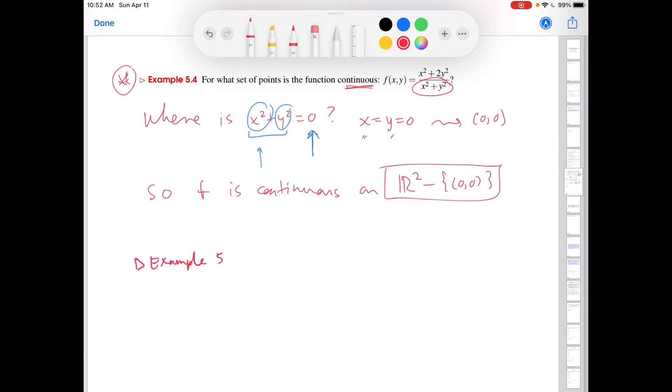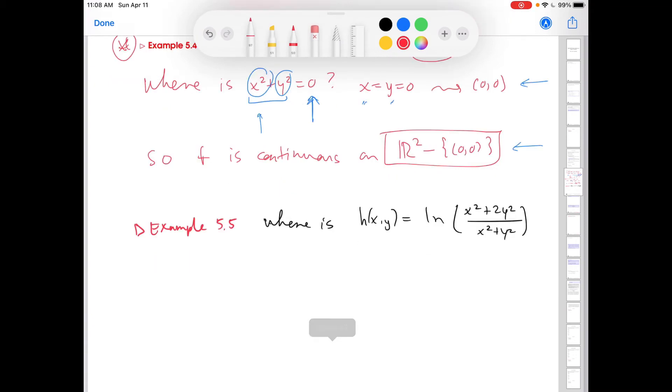So let's talk about a similar result. So how about for what set of points, where is f(x,y) equals ln of this function? And actually, to make things a little easier to talk about, let's call this not f(x,y), let's call this h(x,y). Okay, so we are adding an example here.